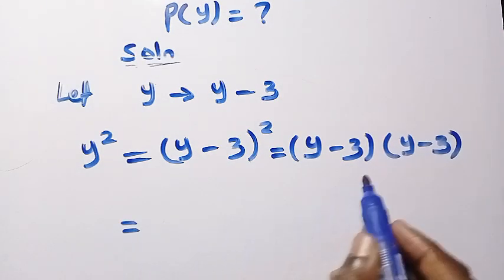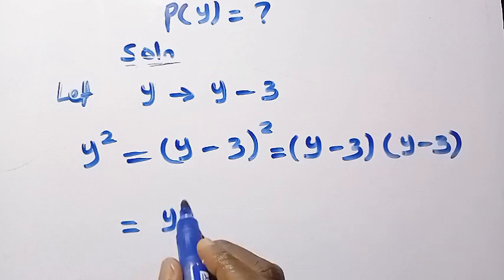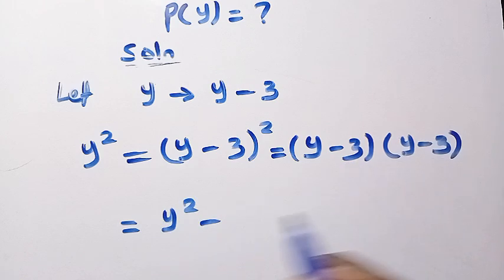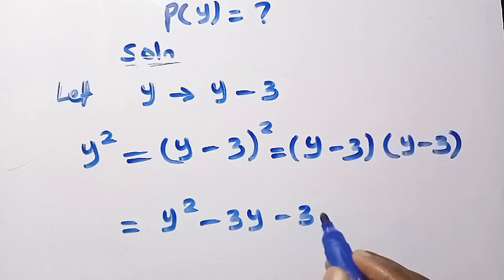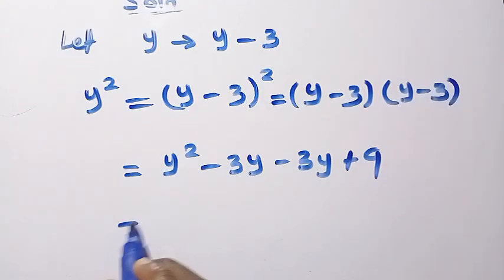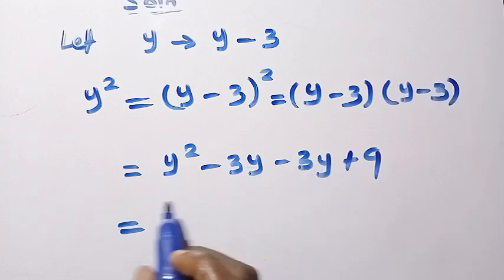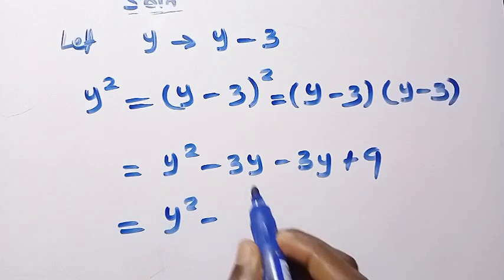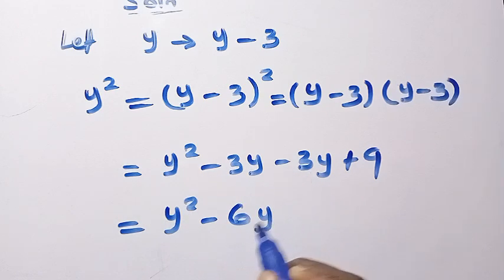The expansion of this gives us y times y, that is y squared, minus y times 3, that is 3y, minus 3 times y, we have it as 3y, plus 3 times 3, that is 9. Here we have y squared minus 6y plus 9. This is what we have for y squared.